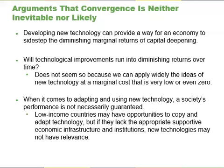The argument that it is easier for a low-income country to copy and adapt existing technology than it is for a high-income country to invent new technology is not necessarily true either. When it comes to adapting and using technology, a society's performance is not necessarily guaranteed, but is the result of whether the country's economic, educational, and public policy institutions are supportive. In theory, perhaps low-income countries have many opportunities to copy and adapt technology, but if they lack the appropriate supportive economic infrastructure and institutions, the theoretical possibility that backwardness might have certain advantages is of little practical relevance.